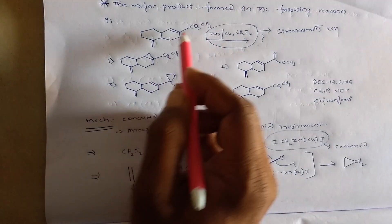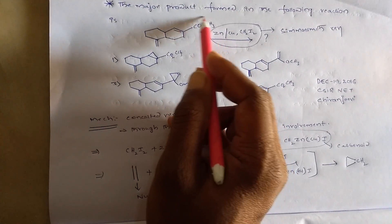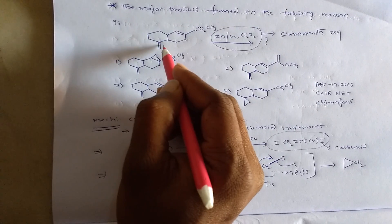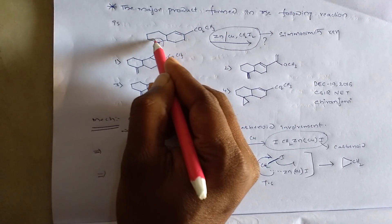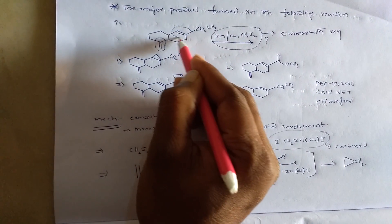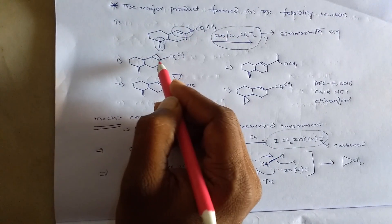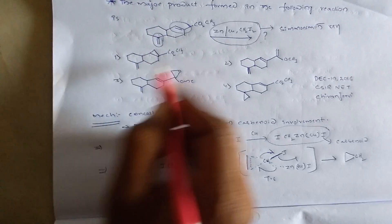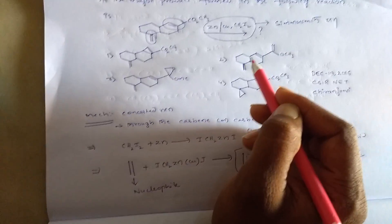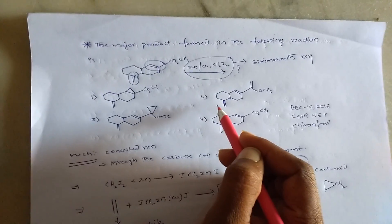If you observe our problem, we have two alkene moieties in the reactant. So the question is: where should the Simmons-Smith cyclopropanation take place?